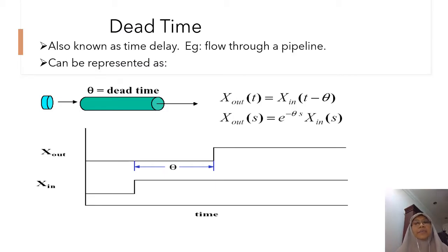Dead time or time delay refers to the time when an input has changed but no change is detected in the output. After a certain time, you see the change in the output. And this time difference is known as dead time. Dead time as represented by theta here refers to, for example, when you have a pipeline, let's say there is a change in the concentration. However, the output does not register any changes except after a certain time. Only then can we detect any changes in the concentration at the output.